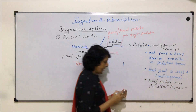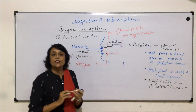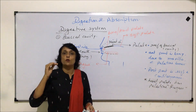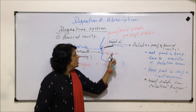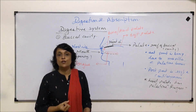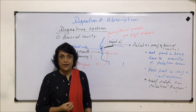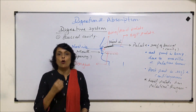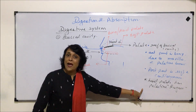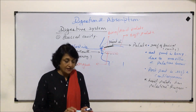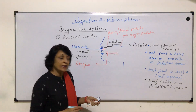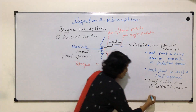The palatine rugae are a rough area — rough in the sense of having ridges — so that they can provide grip when animals are eating their food. These palatine rugae are best developed or most developed in carnivores.